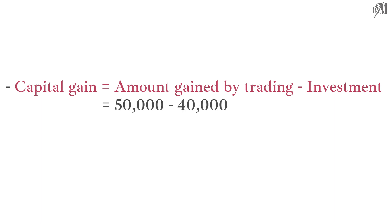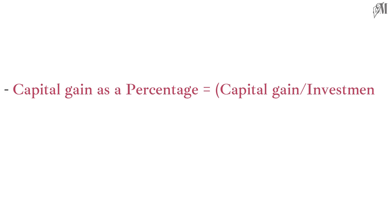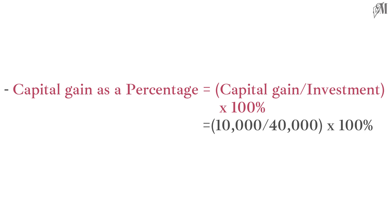So, 50,000 − 40,000 = 10,000 rupees, which is the capital gain of Mr. Perera. To find the capital gain as a percentage, divide the capital gain by the investment and multiply by 100%: 10,000 ÷ 40,000 × 100% = 25%. That's cool and simple!